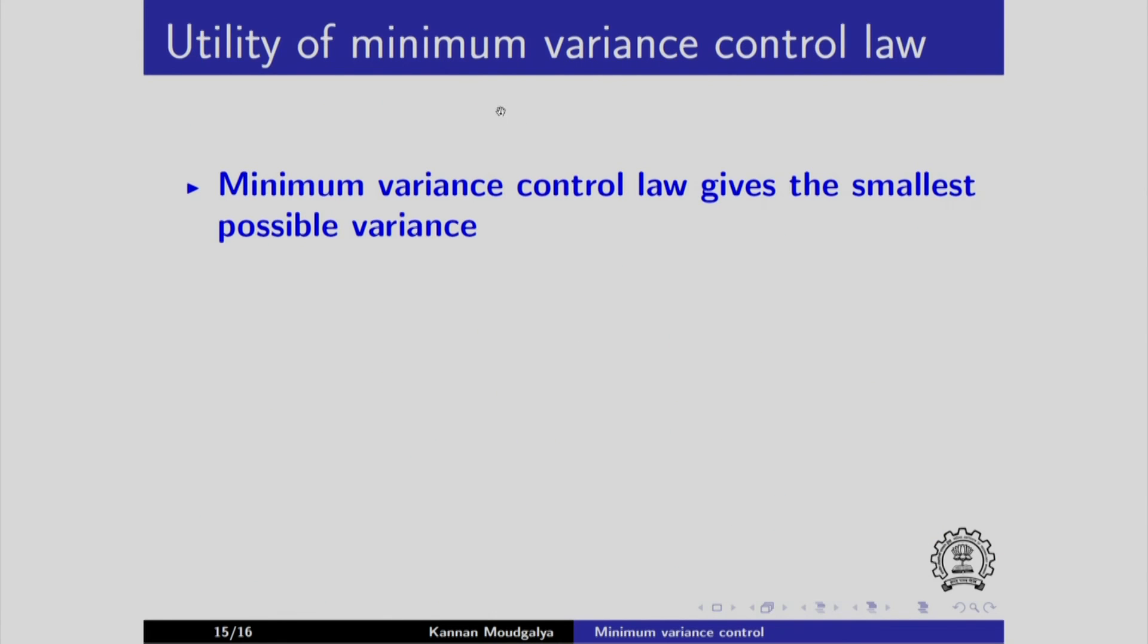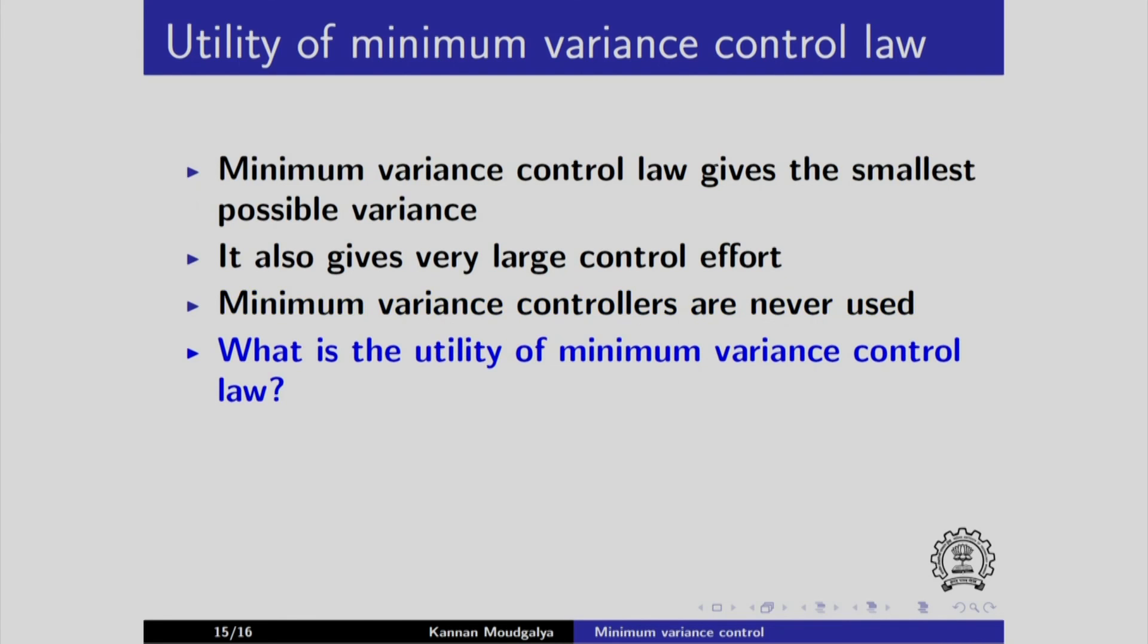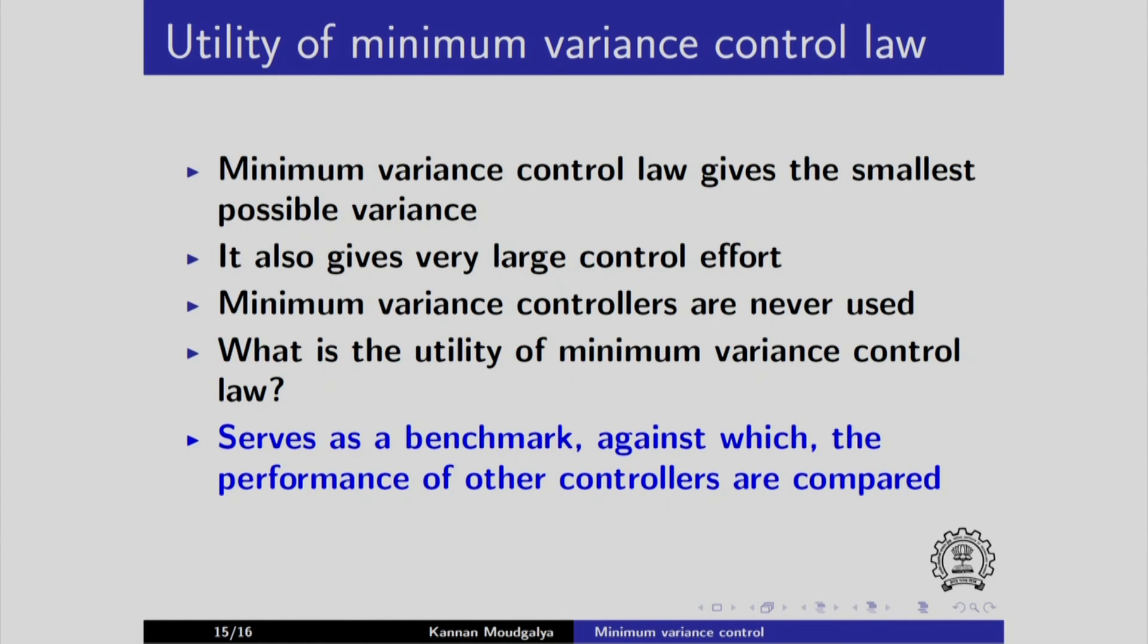Now, we need to discuss the utility of the minimum variance control law. Minimum variance control law gives the smallest possible variance in the plant output y, but it also gives very large control effort. As a result, we never use minimum variance controllers. What is the utility of minimum variance control law? It serves as the benchmark against which the performance of other controllers are compared. It is pursued further in the textbook.